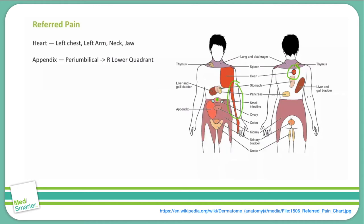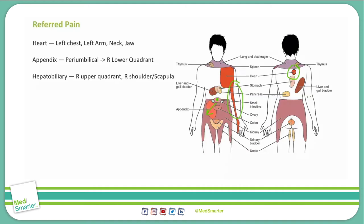McBurney's point is the point that's one third of the distance between the anterior superior iliac spine and the umbilicus, which is right about here. The reason for this is that early appendicitis causes inflammation and pain in the peritoneum, which is felt more in the periumbilical area, and then migrates to McBurney's point as the appendicitis worsens.